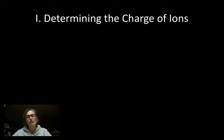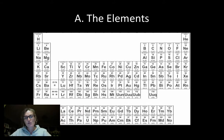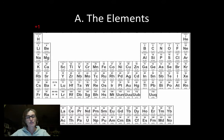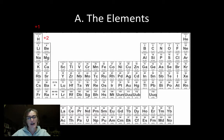Determine the charge of ions. The first ions that we will need to determine the charge of are ions formed out of the elements. Remember, we learned that the charges of the elements follow a periodic pattern. All of the alkali metals and hydrogen form plus one ions. All of the alkaline earth metals, beryllium on down, form plus two ions.